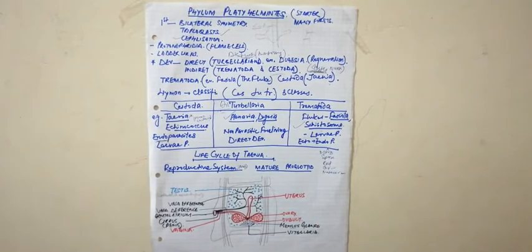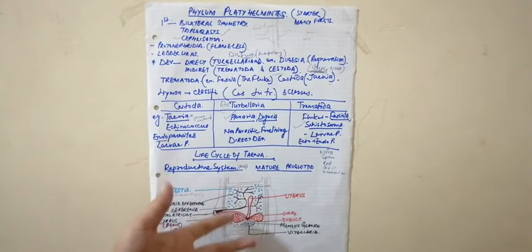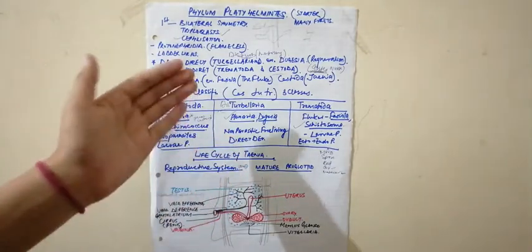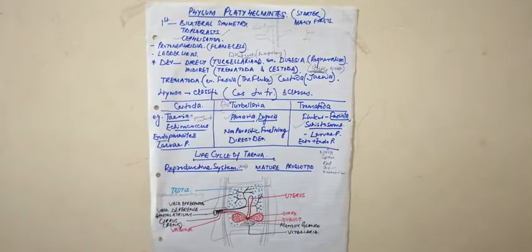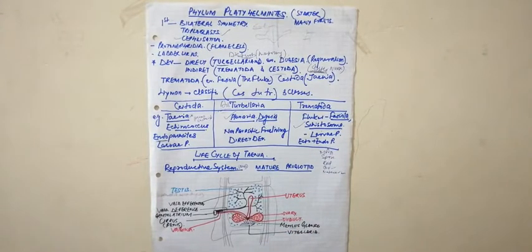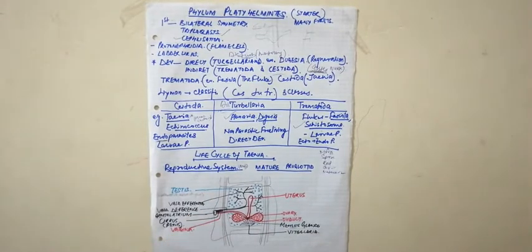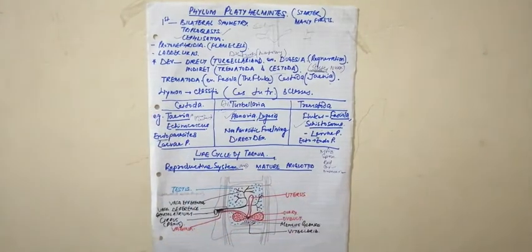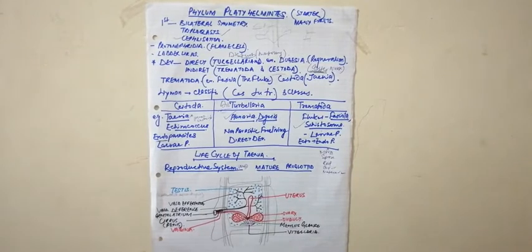The initial 100 to 150 proglottids show protandrous condition — they are hermaphrodite, with each segment having both male and female reproductive systems, but the male reproductive system matures earlier than the female. The later, terminal proglottids are mature (gravid) proglottids, with both male and female reproductive organs fully matured. Cross-fertilization occurs between the initial and gravid proglottids.